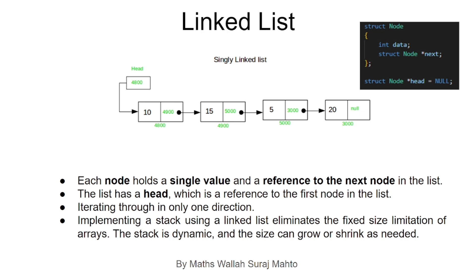The second topic is linked list. A linked list is like storage where we can store a single data type. In an array we need to define size — it might be an array of 4 or 5 — but in a linked list we can keep a single value per node. Also, in a linked list we can iterate in only one direction; backward iteration is not possible.